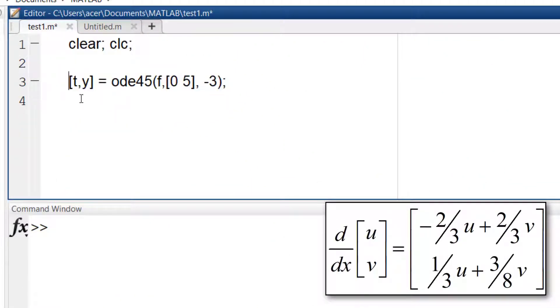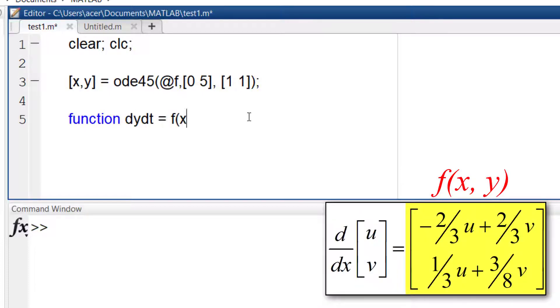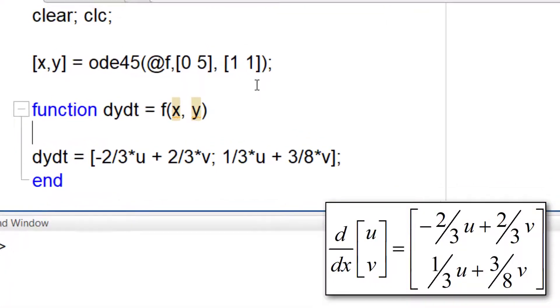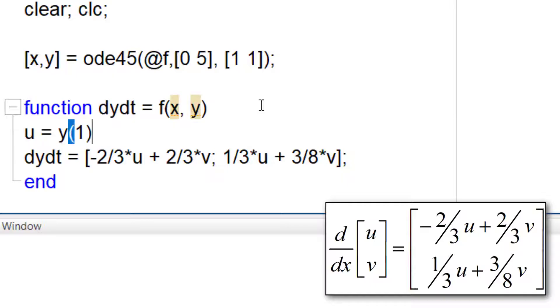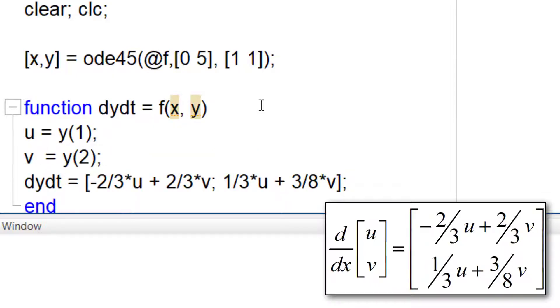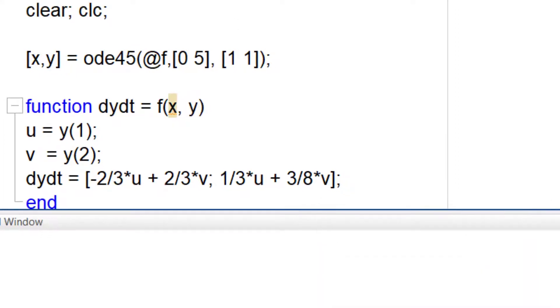ODE45 takes the function handle, so I have to add an at sign before f. Then I'll have time span and initial values. To define my function f, I have to define this vector. So I name the output argument dy dt, which is equal to this vector. Obviously, I cannot run this code since MATLAB doesn't know what u and v are. The function receives x and y as input arguments. So I can define u and v accordingly. u is the first element of y and v is the second element of y.